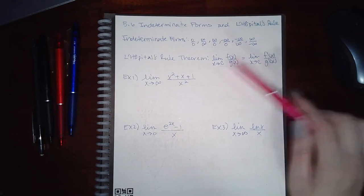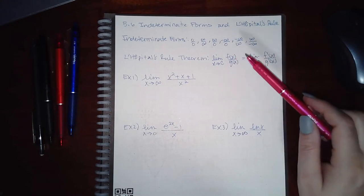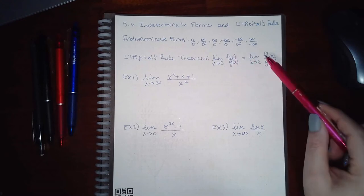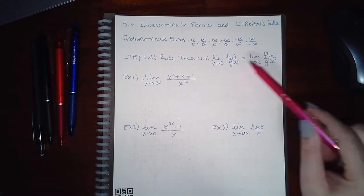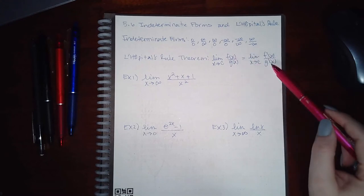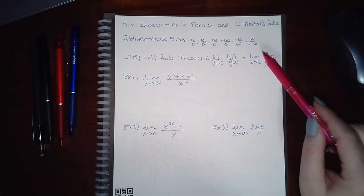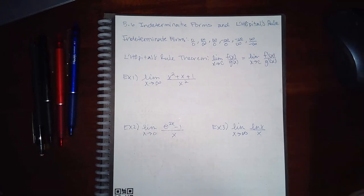You don't use the quotient rule. Instead, you take the derivative of the numerator and the derivative of the denominator separately, and those limits are supposed to be the same.